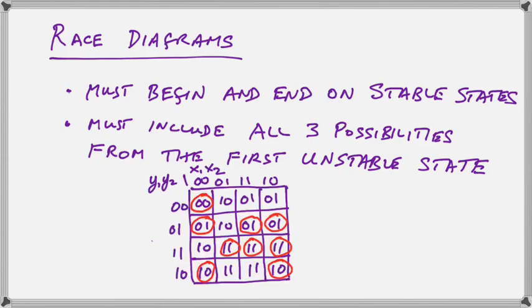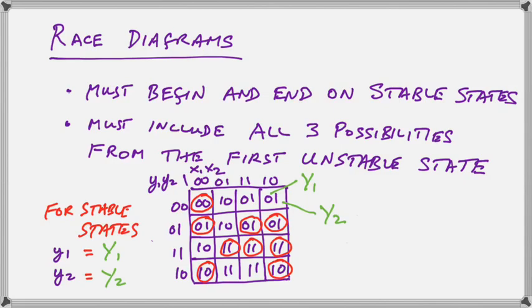This is the transition table that we are using for analyzing our races. Notice that we have the squares with y1, y2, x1 and x2. Each square is denoted by the value. In addition to the square number, there's actually something inside the square. What's inside the square? Big y1 and big y2. Where the little y1 and y2 equal the big y1 and y2, we have a stable state. So the stable states are circled in red.